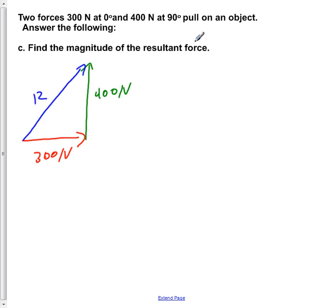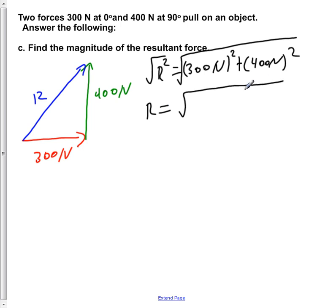In order to solve for the magnitude of R we have to apply the Pythagorean theorem, which dictates R squared is equal to 300 N squared plus 400 N squared. In order to solve for just R we have to take the square root of both sides. So we would find that R is equal to the square root of 300 N squared plus 400 N squared.